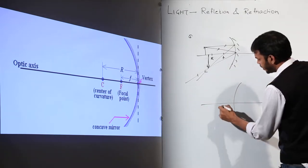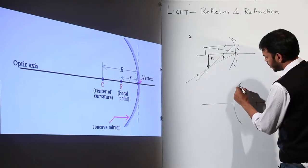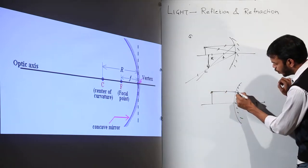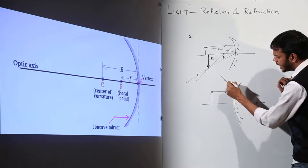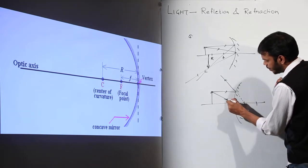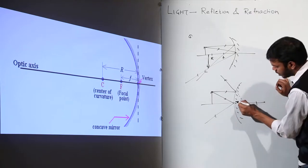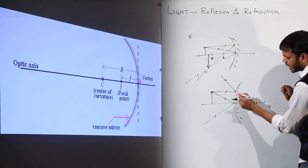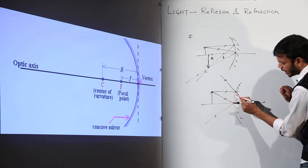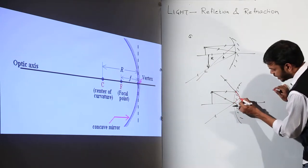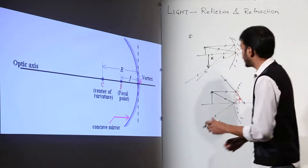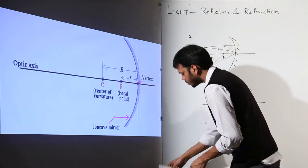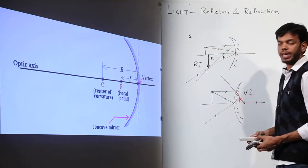The same approach works for a convex mirror. Taking the convex mirror with f and 2f: the first ray is parallel to the principal axis, passing through focus, and the second ray reflects back at the same angle. Extending both rays in the virtual direction gives the image on the opposite side. In the concave case we got a real image, whereas in the convex case we got a virtual image.